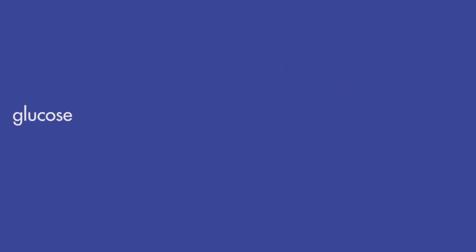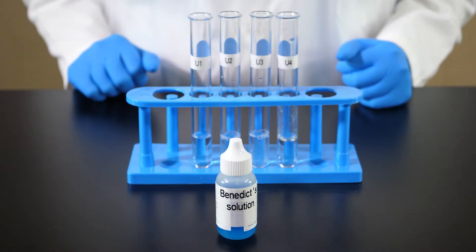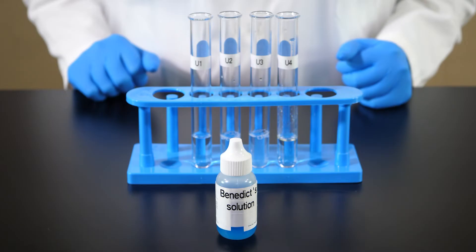If glucose is present in a solution, Benedict's solution will turn the solution red. This is called a positive reaction. If no glucose is present, the color of the solution we are testing will remain unchanged.